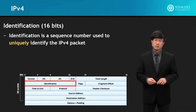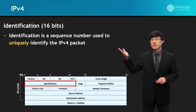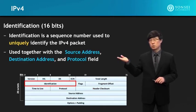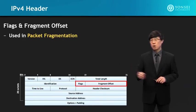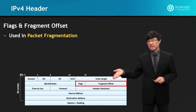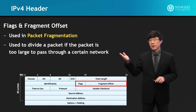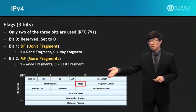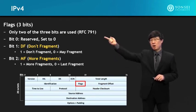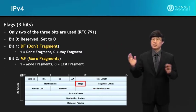The identification field is 16 bits — a sequence number used to uniquely identify the IPv4 packet, used together with the source address, destination address, and the protocol field. The flags and fragment offset are used in packet fragmentation — to divide a packet if it is too large to pass through a certain network. There are three flag bits, but only two are actually used; the first bit is reserved.